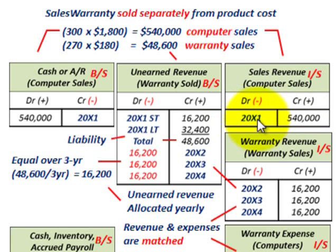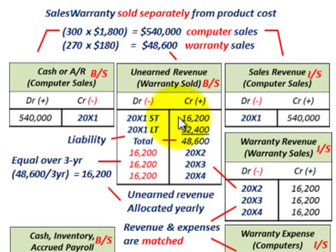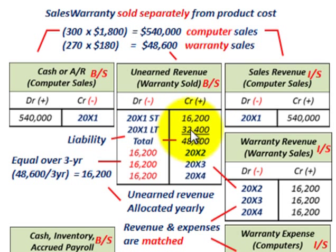For the warranty sales of $48,600, this is recorded separately as unearned revenue — a liability on the balance sheet — because we haven't earned anything on them yet. The total $48,600 is split into a short-term portion of $16,200 for one year and a long-term portion of $32,400, giving a total unearned revenue liability of $48,600 at end of 20x1.